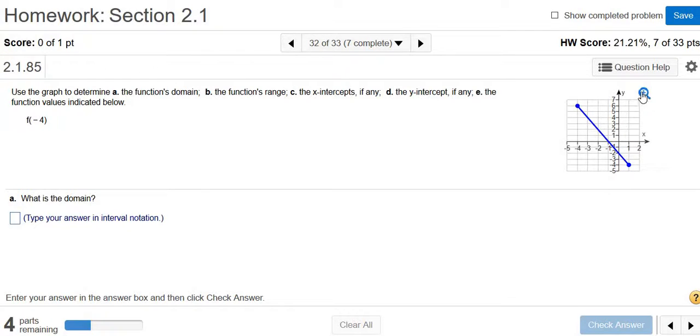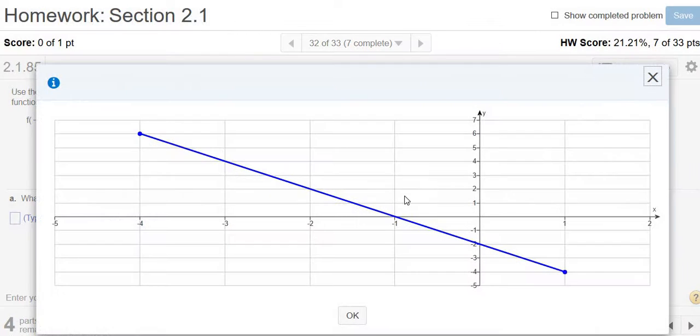We'll start by clicking on this magnifying glass, and now we can find the domain. The domain is all of the x's that give us y values. The first x that gives us a y value is negative 4. It looks like it's going to be negative 4 all the way to 1. It's always left or right for domain, so negative 4 all the way to 1 are the x's that give us y values.